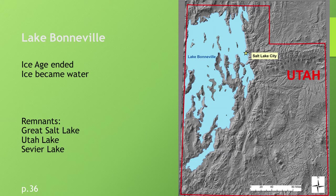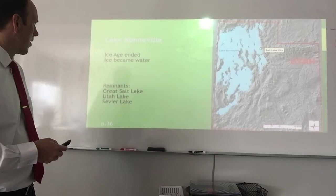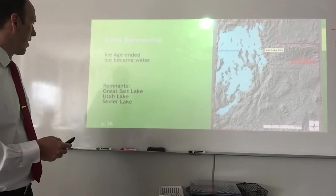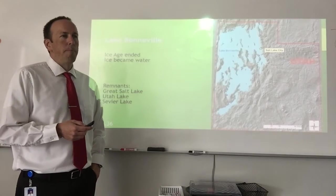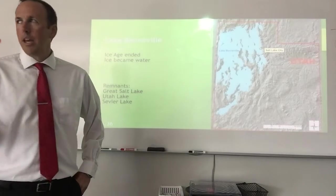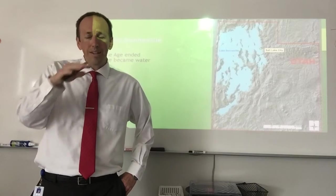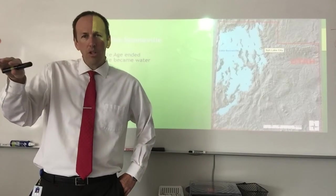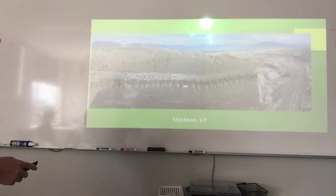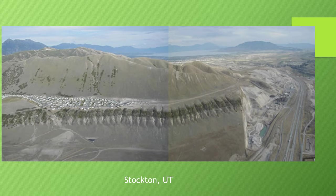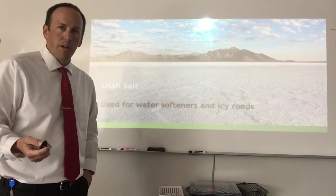Here's Lake Bonneville. As you can see, we would be underneath the water. The ice age ends, ice becomes water. Remnants of this lake are the Great Salt Lake, Utah Lake, and Sevier Lake — it's on page 36 of your book. If you look at any of these hills, you can see the edge of where Lake Bonneville used to be — especially in Stockton, you can really see that edge. It just looks like a shoreline. Just remember that all of this has been underwater at some point.